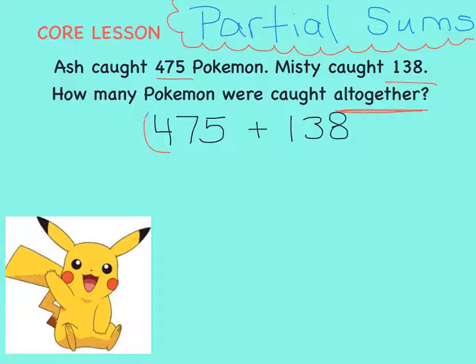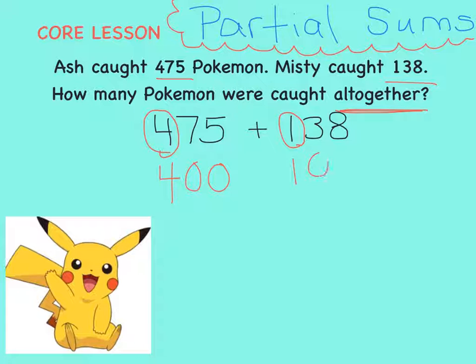The four has a value of 400. And the one has a value of 100. Together, they equal 500.